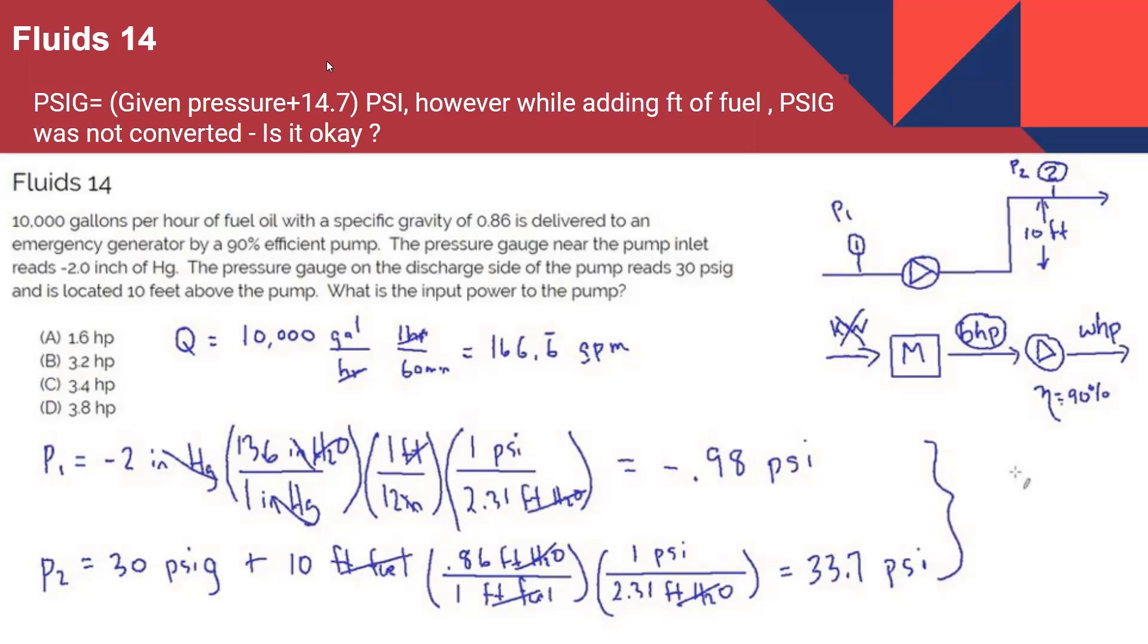I'm sorry, like if I have 50 PSIG, right? That means 50 PA plus 14.7, right? So it's going to be 64.7 PSI, right?